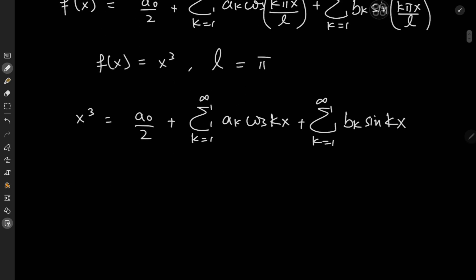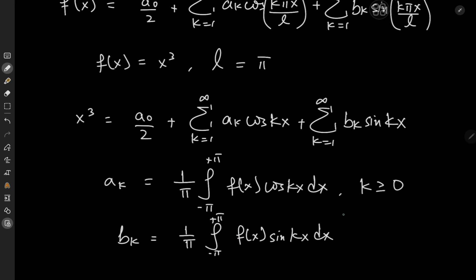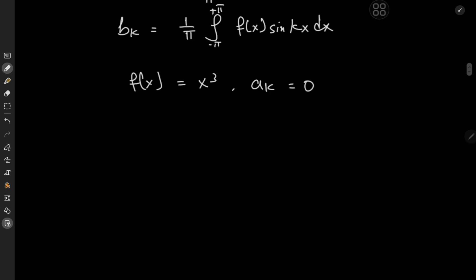Now how do we work out these coefficients? a_k is defined as 1 over pi times the integral from negative pi to positive pi of f of x times cosine of kx dx — this is valid for k non-negative, recovering a₀ and all a_k's. And b_k is defined as 1 over pi times the integral from negative pi to positive pi of f of x times sine of kx dx. Now notice that f of x equals x cubed is an odd function, and cosine is an even function. So a_k involves an integral of an odd function over a symmetric interval, meaning a_k equals 0. All that's left is to evaluate b_k.